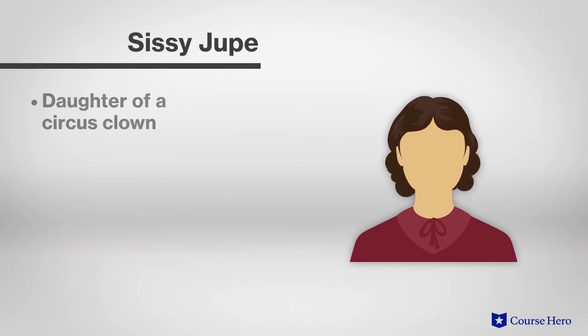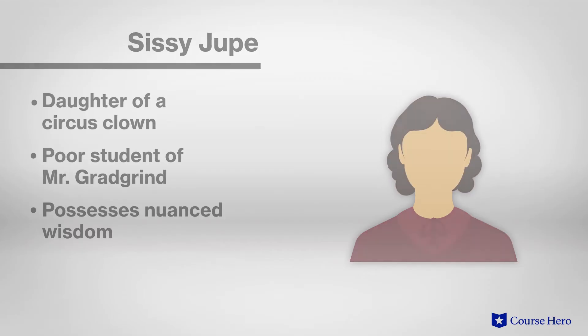Sissy Jupe is the daughter of a circus clown who hopes his daughter will get an education and have a more stable life than he and the circus could provide. Sissy is a poor student of Mr. Gradgrind's facts and reason-based curriculum, but she realizes facts are not the only basis for knowledge.